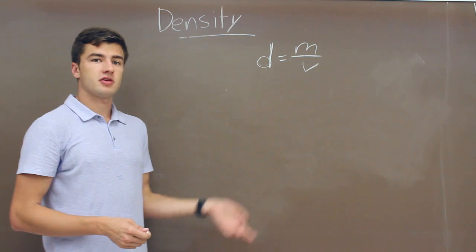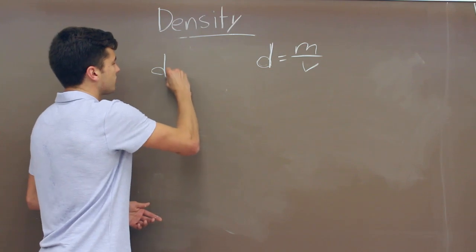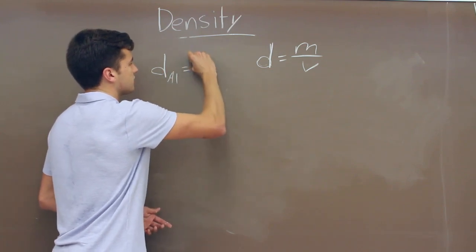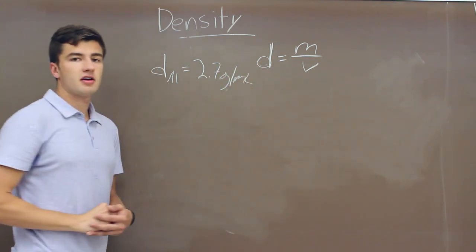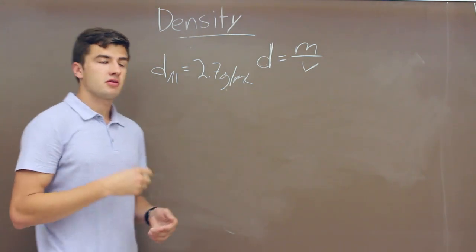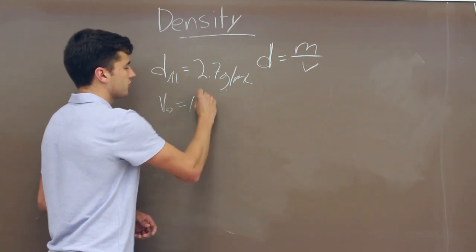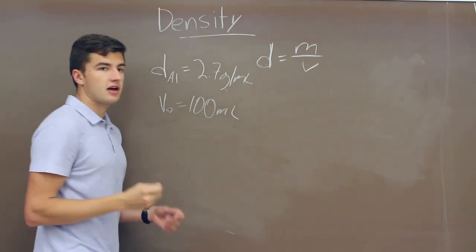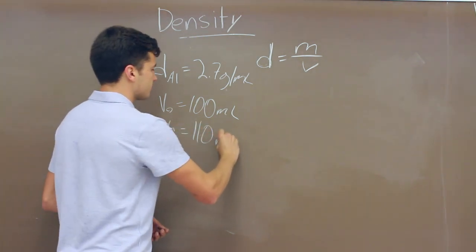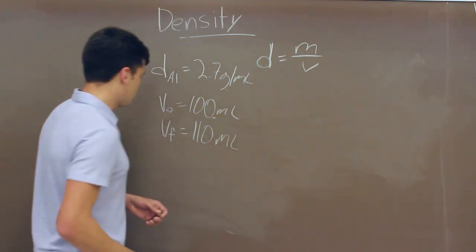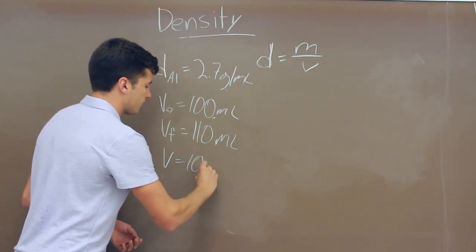We know the identity of our object and we can calculate the volume. In this case, we have aluminum, and we know the density of aluminum is equal to 2.7 grams per milliliter. We'll put it into a container of water and measure the volume change. The initial volume is 100 milliliters; after adding our object, the final volume is 110 milliliters, so the volume of our aluminum block is 10 milliliters.